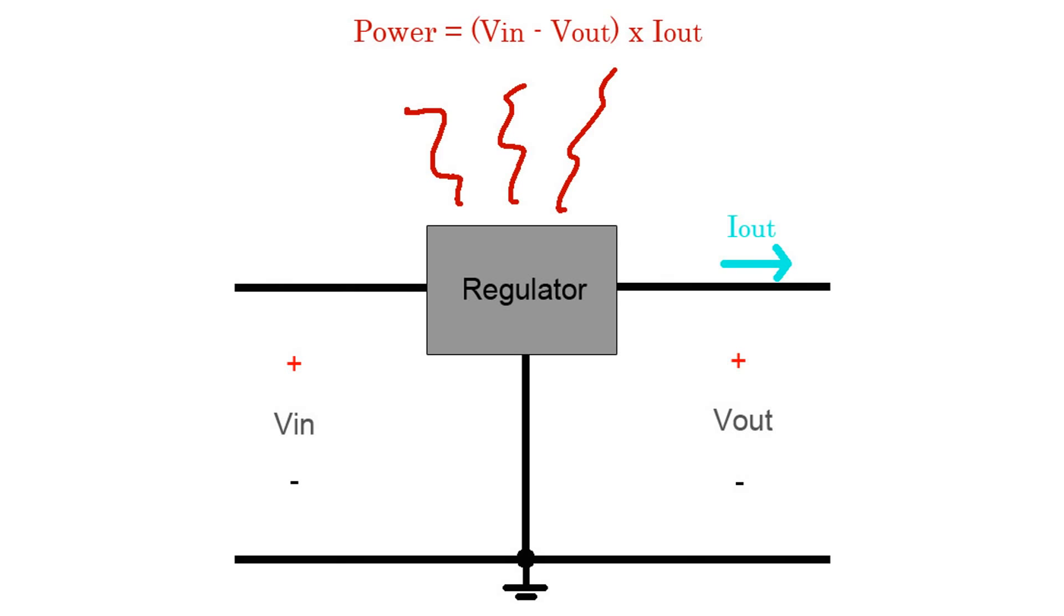Finally let's talk about wasted heat. The LM317 is a linear voltage regulator and the efficiency equations are exactly the same as the 7805's. The bigger the difference between the input voltage and the output voltage the more heat gets produced.